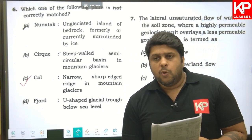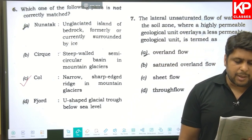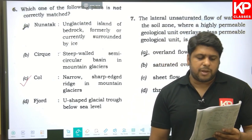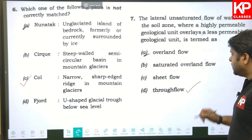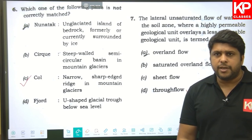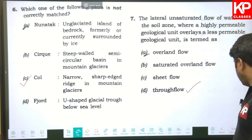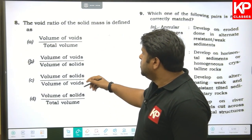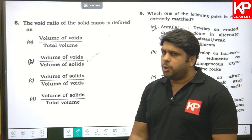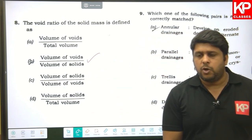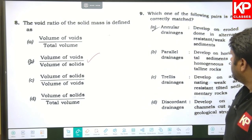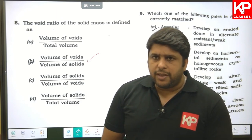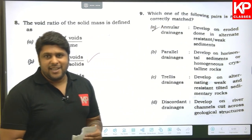Question seven: the lateral unsaturated flow of water in the soil zone, where a highly permeable geological unit overlies a less permeable unit, is termed as through flow. They are asking for a direct definition, so the answer is through flow — option D is correct. Question eight: the void ratio of a solid mass is defined as the volume of voids divided by the volume of solids, i.e., Vv/Vs.